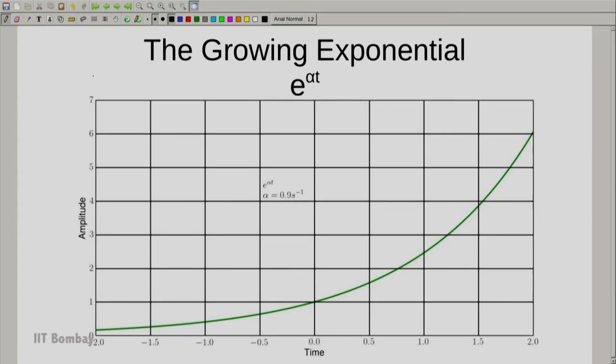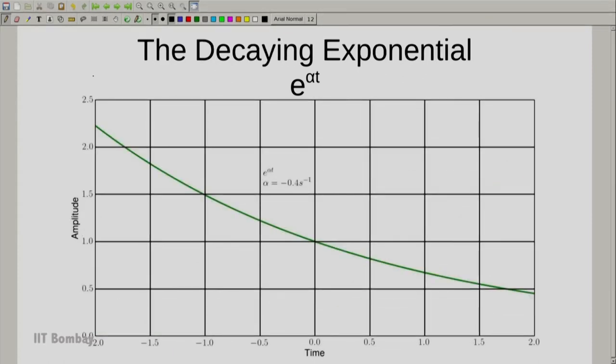Very simple signal and of course if alpha is made negative we get the decaying exponential. And in this case we take alpha as negative 0.4. Both signals are actually quite simple but we will see it several times during the course.